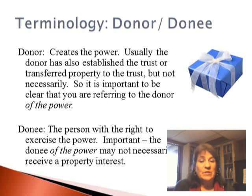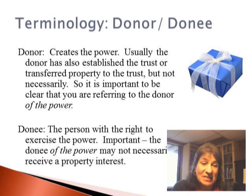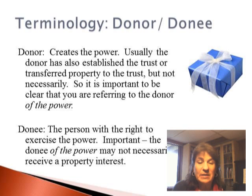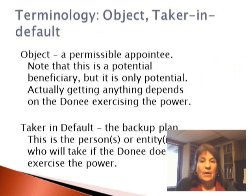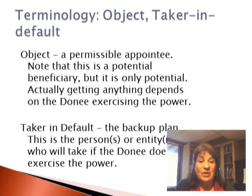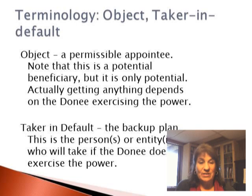The donee is the person with the right to exercise the power. Notice that this person may not actually receive an interest in the trust. Sometimes we call the donor the creator of the power, and sometimes we call the donee the holder of the power. The object of the power is a permissible appointee — kind of like a potential beneficiary, but only potential. Getting anything depends on the donee actually exercising the power. Then there's usually a taker in default — that's the backup plan, the person or entity who gets something if the donee does not actually exercise the power.